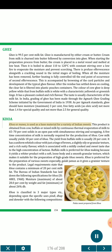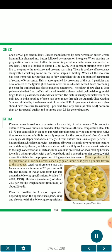Khoya (or Mawa) is used as a base material for a variety of Indian sweets. This product is obtained from cow, buffalo or mixed milk by continuous thermal evaporation of milk to 65–70% solids in an open pan with simultaneous stirring and scraping. A 5-time concentration of milk is normally required for the production of khoya. Cow milk usually yields 18% khoya and buffalo milk yields usually 20%. It has a uniform whitish color with just a tinge of brown, a slightly oily or granular texture, and a rich nutty flavor associated with a mildly cooked and sweet taste due to the high concentration of lactose. Buffalo milk is preferred for khoya making because it yields a whiter product with a soft, loose body and smooth granular texture, suitable for the preparation of high-grade khoya sweets. Khoya is preferred for preparation of various sweets, especially gulab jamun, as it gives a grainier texture to the product. Legal requirements state that khoya contains a minimum of 20% milk fat. The Bureau of Indian Standards specifications (IS 4883, 1968): moisture maximum 28.0% by weight and fat minimum 26% db. Keeping quality of packaged khoya at room temperature is low and refrigerated storage is recommended.